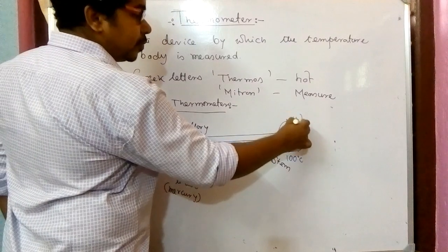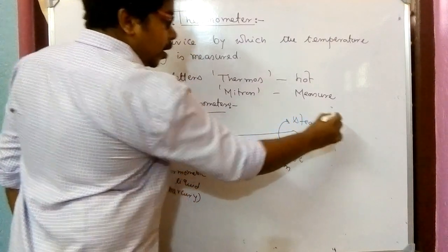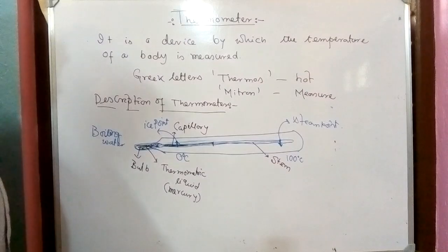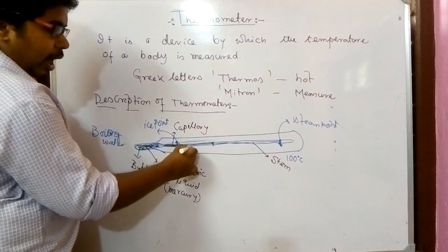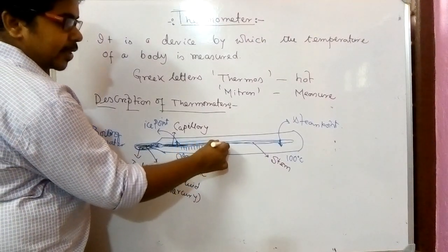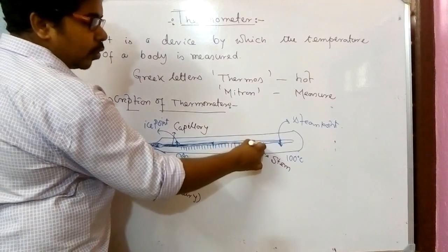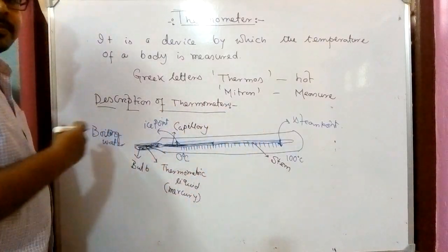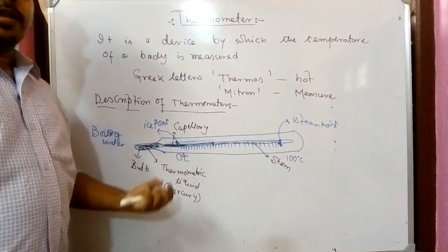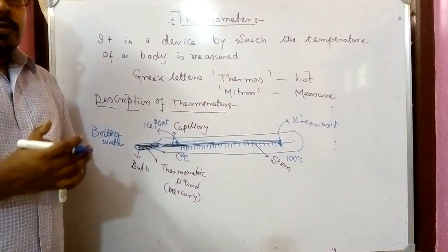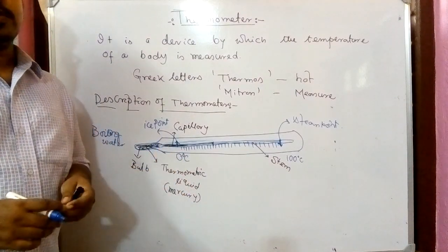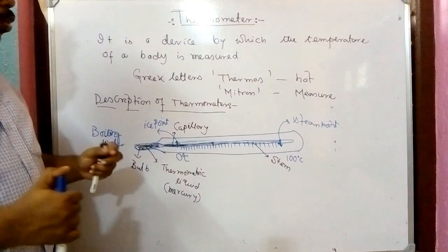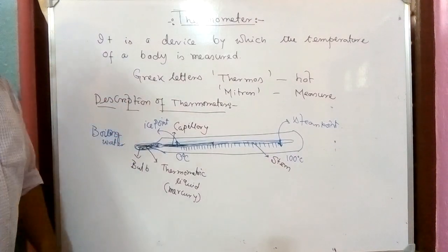The difference between 0 and 100 is 100, so in between 0 to 100 we make 100 equal divisions — that is 100 scaling divisions. Then we get a scaling, and now it is easier for us to measure any unknown temperature with the help of the thermometer. That is the basic description of a thermometer by which we can measure the temperature of a body.